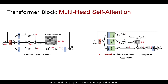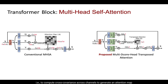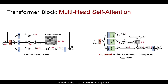In this work, we propose multi-head transposed attention, in which the key ingredient is to apply self-attention across channels rather than the spatial dimension. That is, to compute cross-covariance across channels to generate an attention map encoding long-range context implicitly.